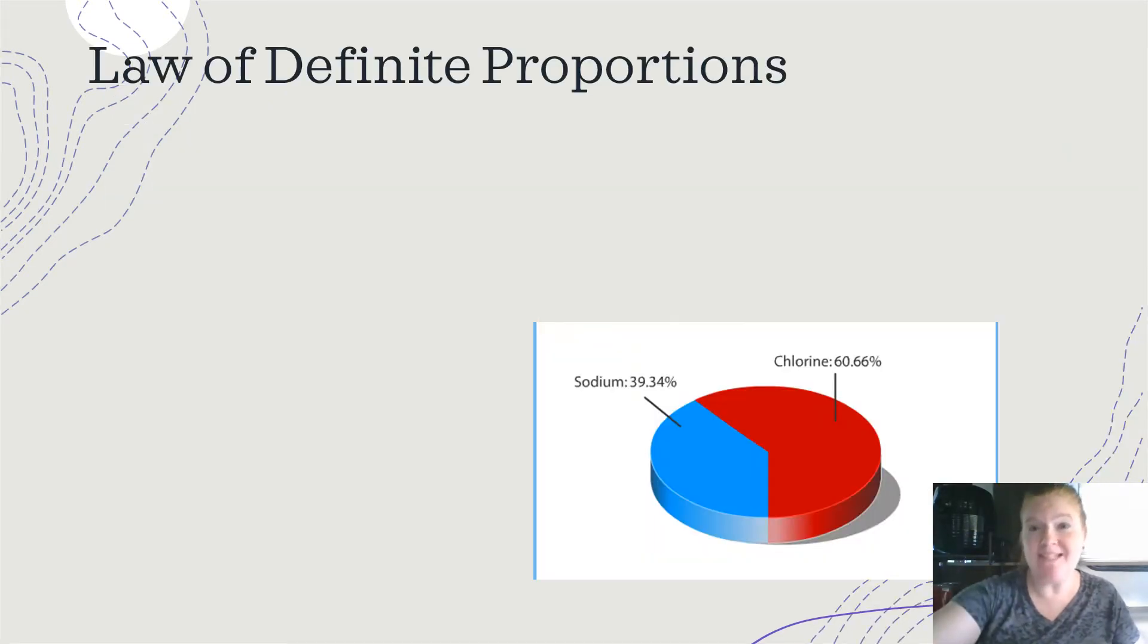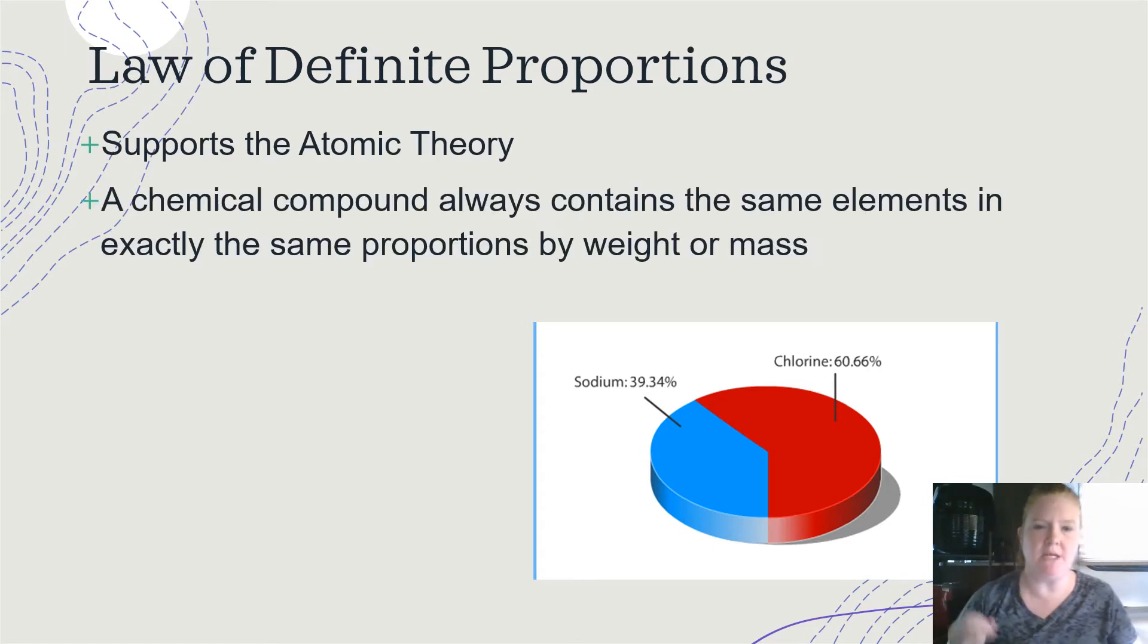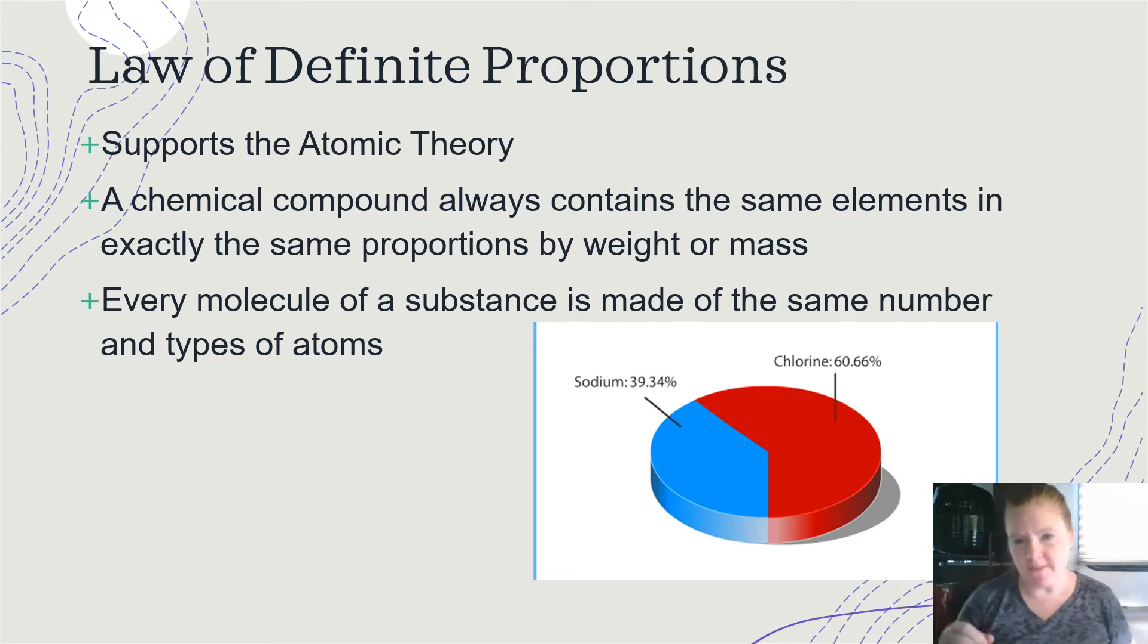Okay, the law of definite proportions. Remember, definite means that's the way it is. So again, supports the atomic theory. What does it mean? A chemical always contains the same elements in exactly the same proportions by weight or mass. So if a compound is 20% hydrogen and 80% nitrogen, it is always that ratio 100% of the time. So every molecule of a substance is made of the same number and types of atoms. So water is H2O. So a molecule water always has two hydrogen and one oxygen, no matter which water molecule you look at. Always the same.